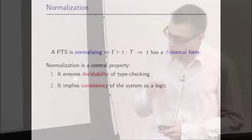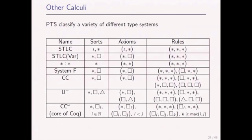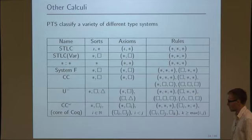Normalization in these systems is very important. A Pure Type System is normalizing if any well-typed term has a beta normal form. Normalization ensures decidability of type checking — the least you could ask of a type system is to decide whether a term has a type or not. It also allows comparing terms, which is necessary for type checking. Furthermore, if you view the system as a logic — pi quantification as universal 'for all', and types as propositions — normalization implies consistency of this logic: not all propositions are provable.